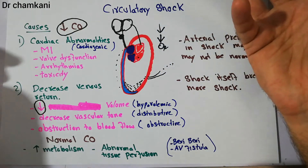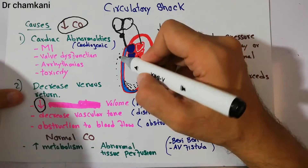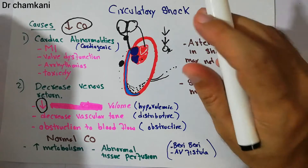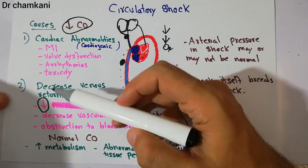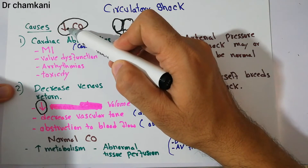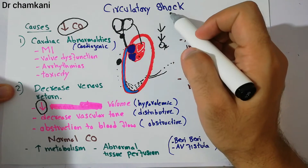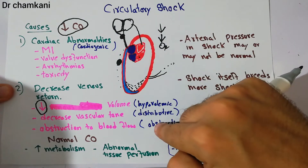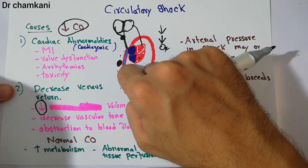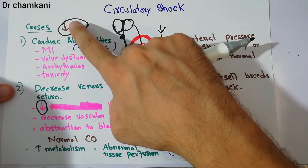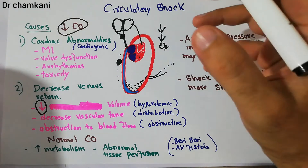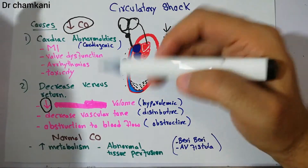Whatever may be the cause of obstruction, it will ultimately lead to decreased venous return, and when blood is not properly returning to the heart it will lead to decreased cardiac output, and ultimately shock will occur. Obstructive shock is a kind of shock in which decreased venous return due to obstruction to blood flow ultimately leads to circulatory shock.